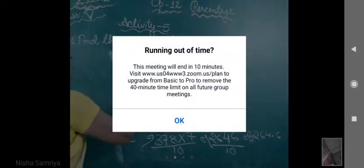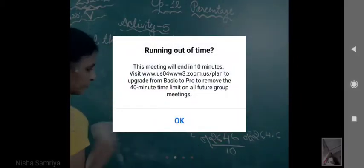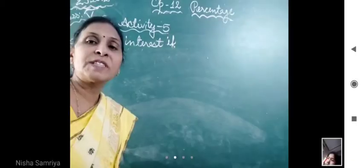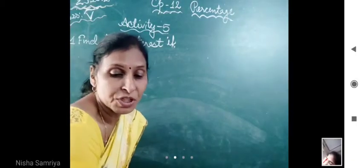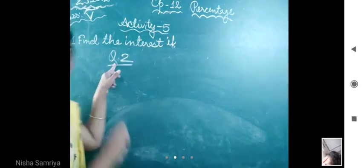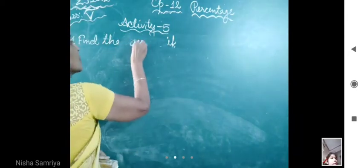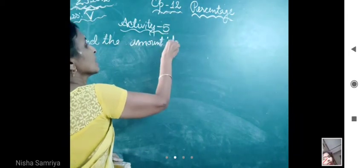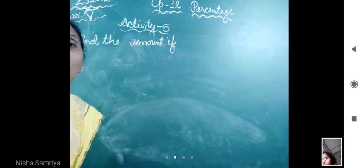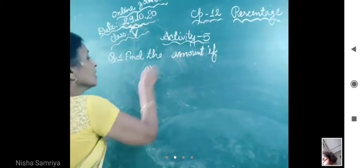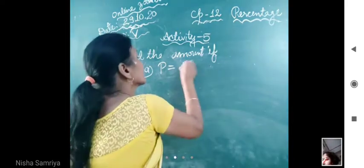Now you see the second question. Abhi aap question number 2 dekhe. E-part aapko khud ko karna hai. Now you see the second question. In question number 2, find the amount. Hame kya chis calculate karna hai isme? Amount calculate karna hai. Toh ab amount kaise calculate karna hai? Now all of you see. Given, that is P is equals to rupees 800.